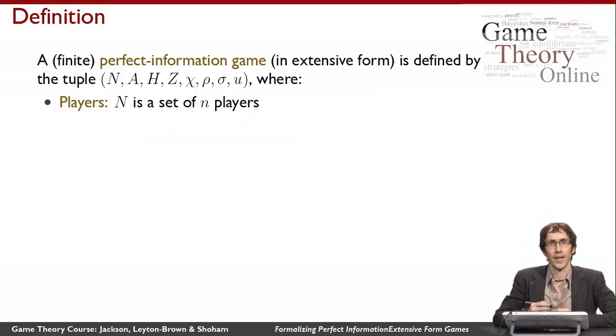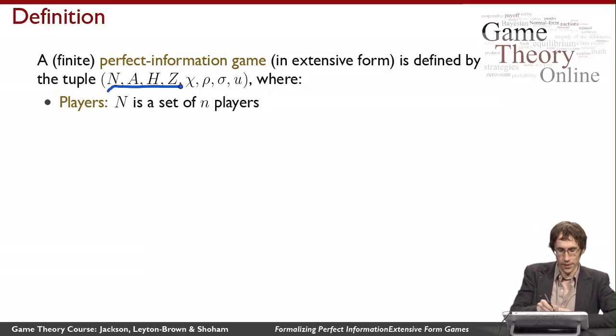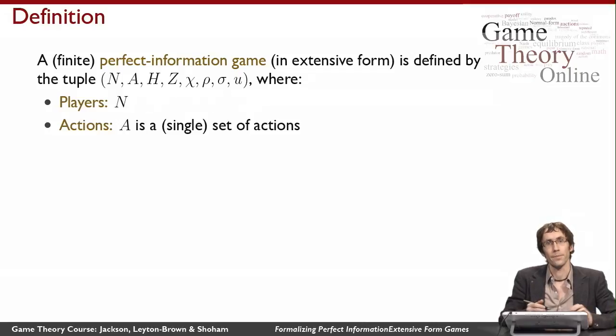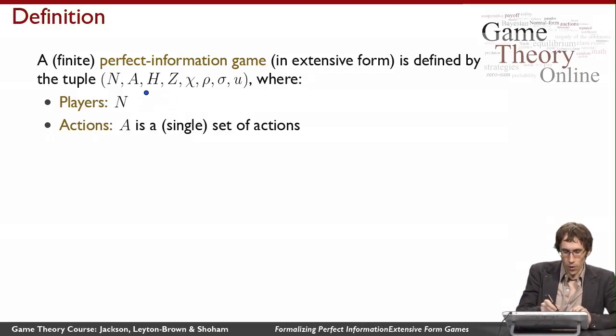A perfect information game in extensive form is defined in a way that's much more complicated than normal form games. We need all of these different pieces. We have a set of players as before, and we have a set of actions, which now is just a single set for all players rather than having a different action set for everybody.